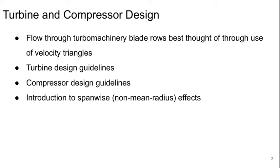Last time we introduced basic turbomachinery concepts, but today we'll focus on turbine and compressor design. We'll introduce the use of velocity triangles as a way to think through the flow in turbomachinery blade rows, and then we'll go through design guidelines for turbines and compressors. And finally we'll briefly introduce some span-wise or non-mean radius effects.